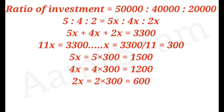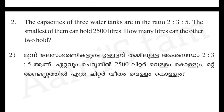We have 5x, 4x, and 2x. The total is 11x. x equals 3300 divided by 11, which is 300. So 5x equals 1500, 4x equals 1200, 2x equals 600. Simple question.